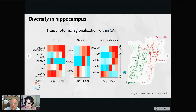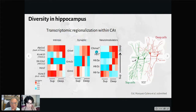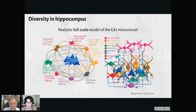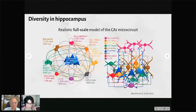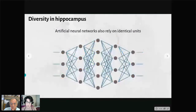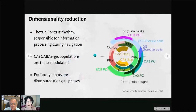The pyramidal cells from CA1 were divided into deep and superficial cells, both with different functionality, connectivity, and intrinsic properties. A genetic analysis shows that gene expression in deep and superficial cells is different, with these genes responsible for both intrinsic and synaptic properties. However, great models like Bezaki's — a realistic full-scale model of the CA1 microcircuit with the same number of neurons as in a rat CA1 — lack this heterogeneity: all model neurons from each population have the same intrinsic and synaptic properties, and this also happens in most artificial neural networks.